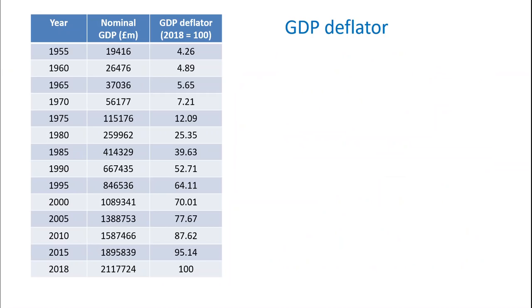I've added an additional column to the table called the GDP deflator. You don't need to worry too much about this for A-level — it's just another measure of inflation in the economy. What you tend to see as an A-level economist would be the consumer price index (CPI) or the retail price index (RPI), which are measures of inflation for things that households tend to buy. The GDP deflator, however, is an inflation measure that looks at the prices of absolutely everything in the economy, so it's a much more holistic measure. The principle here doesn't really matter — I just want you to focus on how we would actually use it.